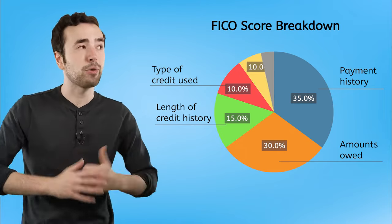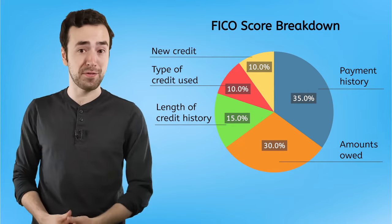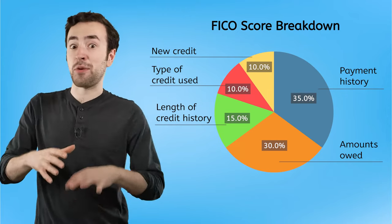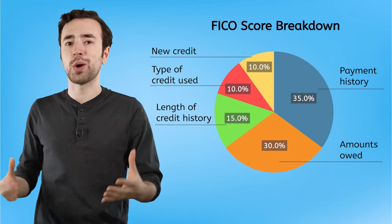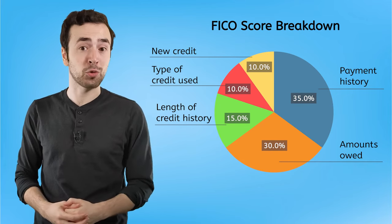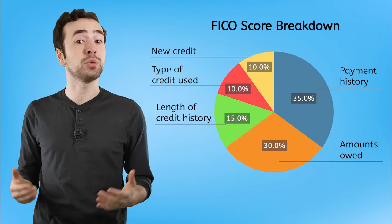And finally, about 10% of your score is determined by how often you apply for credit. If you apply for credit frequently, like applying for multiple different credit cards really quickly, then lenders might see that as you being under financial pressure. So, only apply for credit if you absolutely need to.